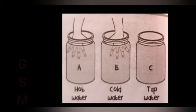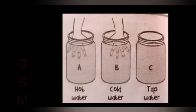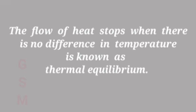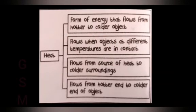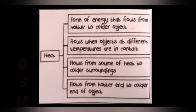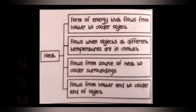The flow of heat stops when there is no difference in temperature. This is known as thermal equilibrium. During thermal equilibrium, if heat still flows from the source to the object, it will be radiated to the surrounding without changing the temperature of the object.